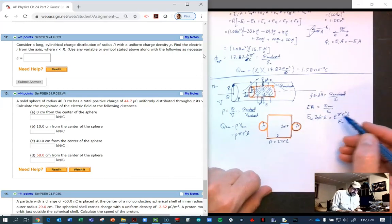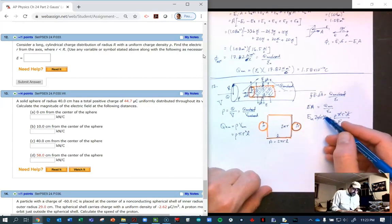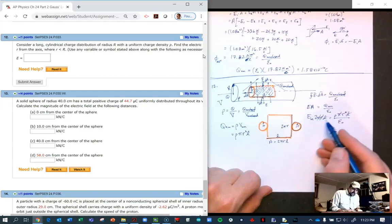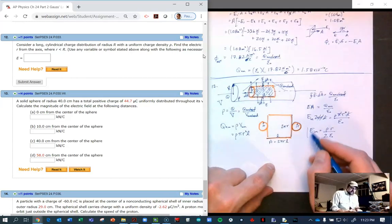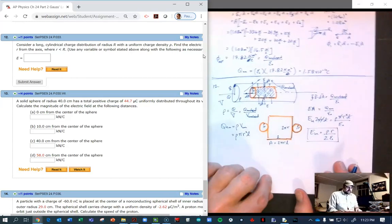We're left with E_in equals ρ times r over 2 epsilon naught. That is the electric field inside of an insulator.